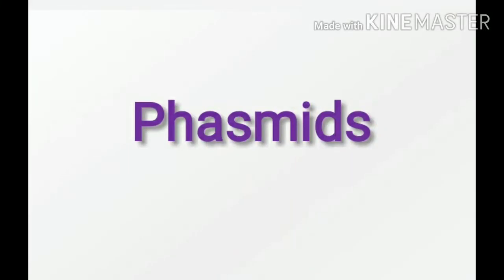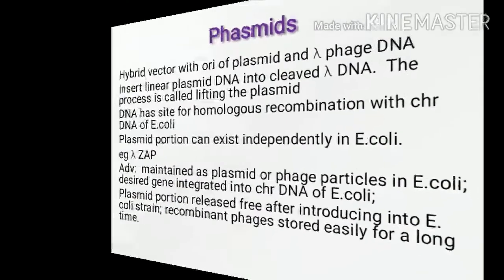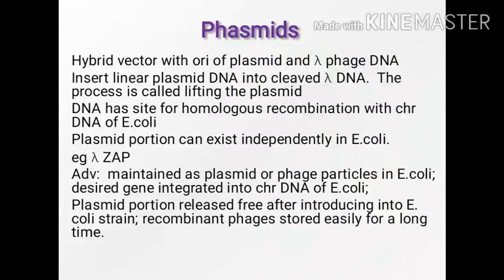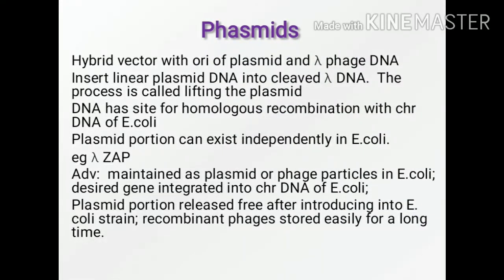Hello everyone. In this video we will see about two vectors: phasmids and phagemids. First we will see what is a phasmid. Phasmid is a hybrid vector with origin of replication of plasmid and lambda phage DNA. The linear plasmid DNA is inserted into the cleaved lambda DNA and the process is called lifting of plasmid.